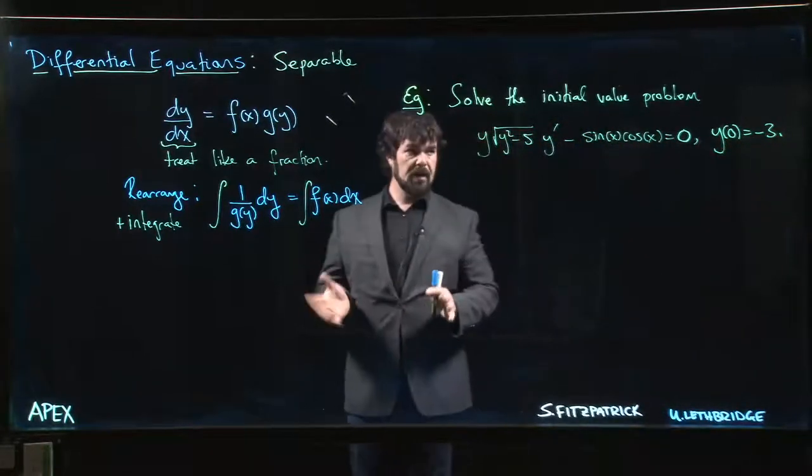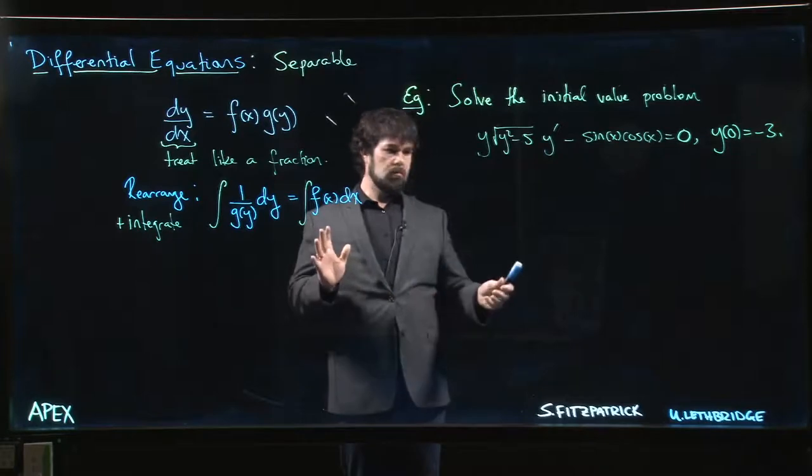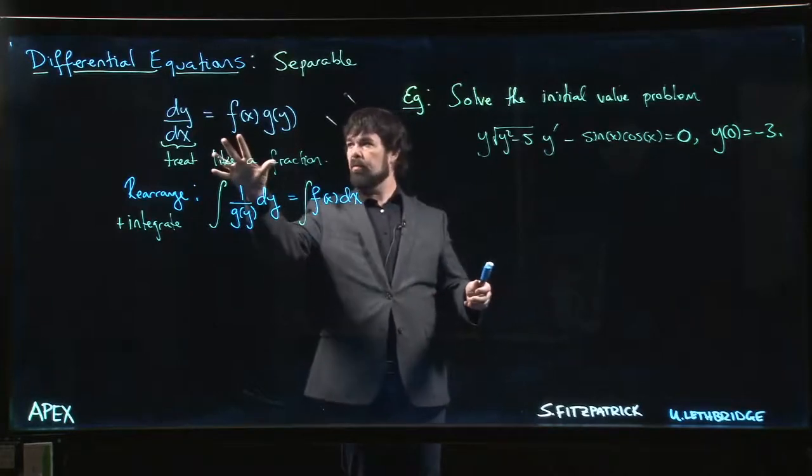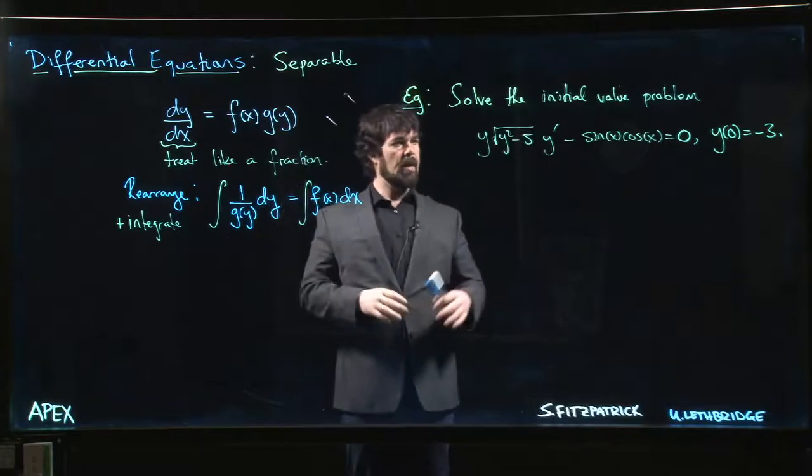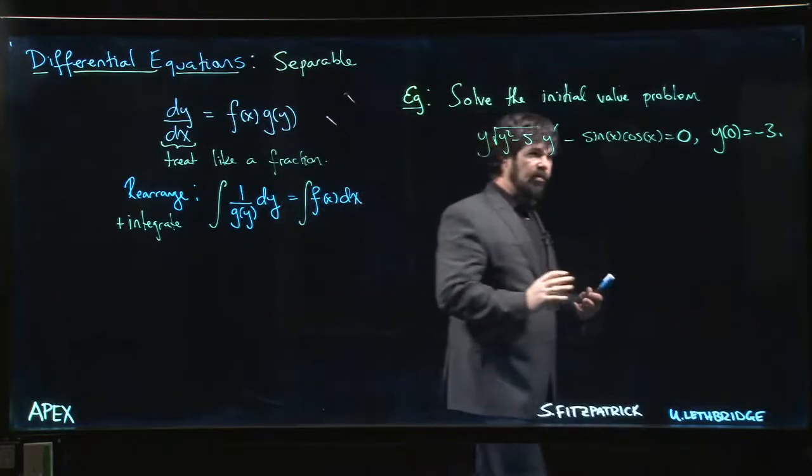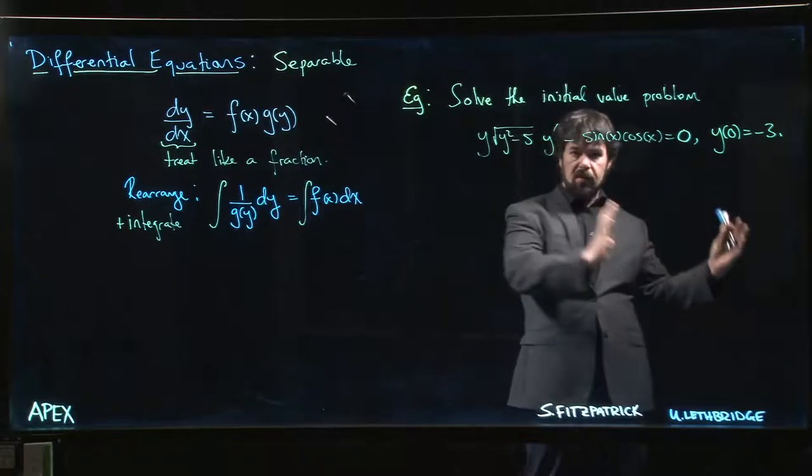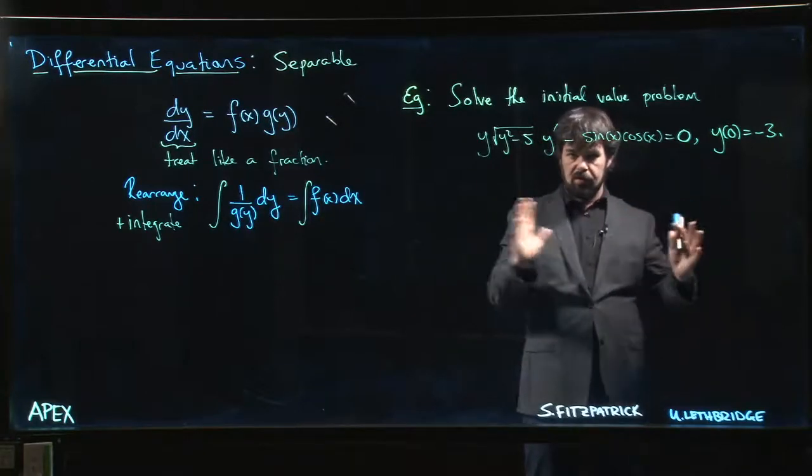So here's a more complicated looking example. It isn't initially in the form that we want, right? It's not quite in this form f of y times g of y. But remember that our goal with these is to try and get everything involving y on one side, everything involving x on the other side, and sort of integrate those independently.